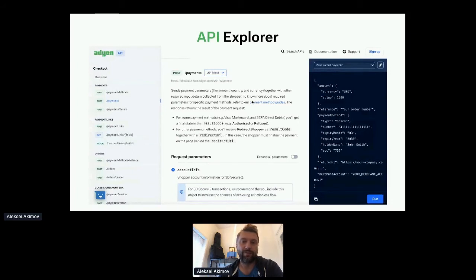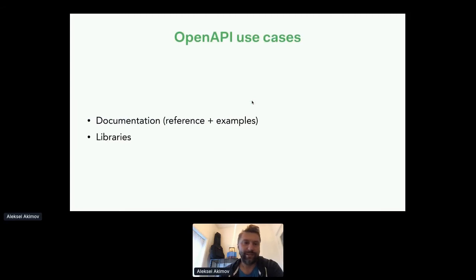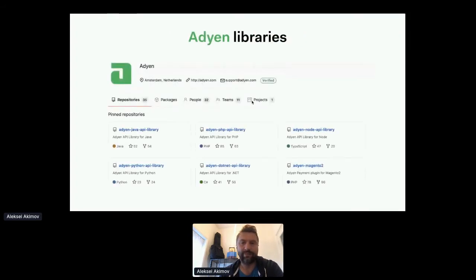Documentation can bring a lot of value if you focus on adding more context thanks to Markdown support and CommonMark. You can have quite extensive documentation that is not only complementary to your main documentation website but becomes valuable on its own. It's also important to realize that the OpenAPI format is not only human-readable — it's also machine-readable. One of the other popular use cases is generating client libraries using open-source tooling that exists out there.